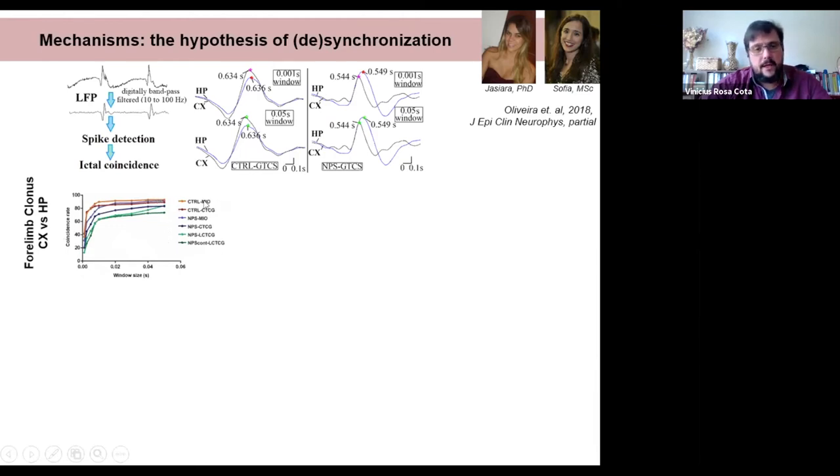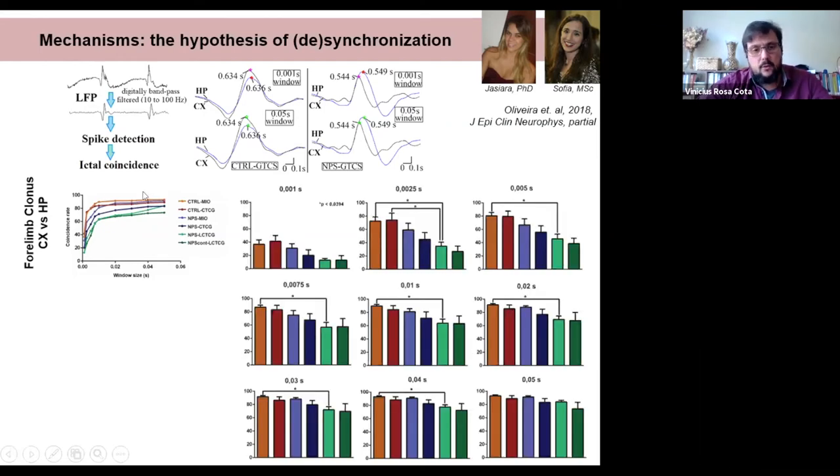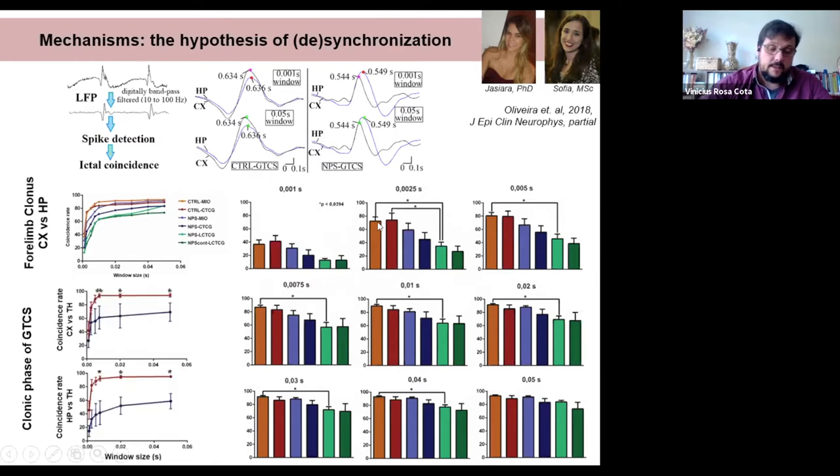What we saw is that the levels of ictal coincidence, coincidence rate across groups, stimulated groups, are different from control groups. I will not go into detail of all these groups, but the red and orange colors are control animals, and the green and blue shades are stimulated animals. We see differences when we decompose it in the groups. We see many differences from stimulated groups from control animals. This is happening during forelimb clonus, when you see cortex versus hippocampus. We also see during the clonic phase of generalized tonic-clonic seizure. We also see differences in both pairs, cortex and thalamus, and also hippocampus and thalamus.